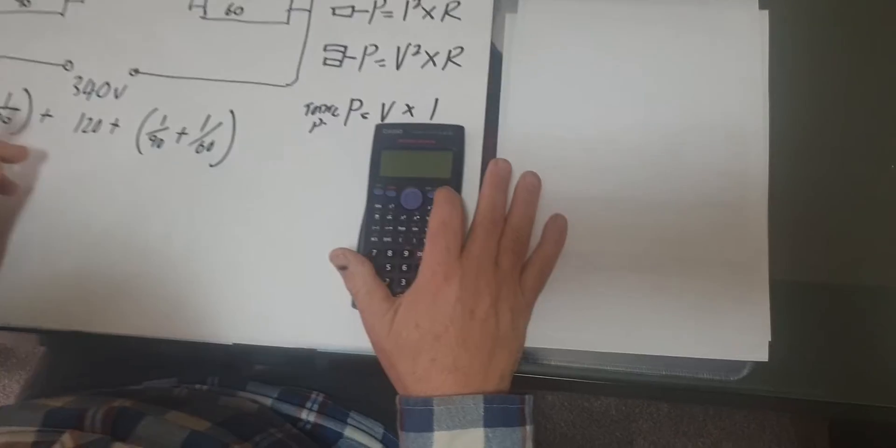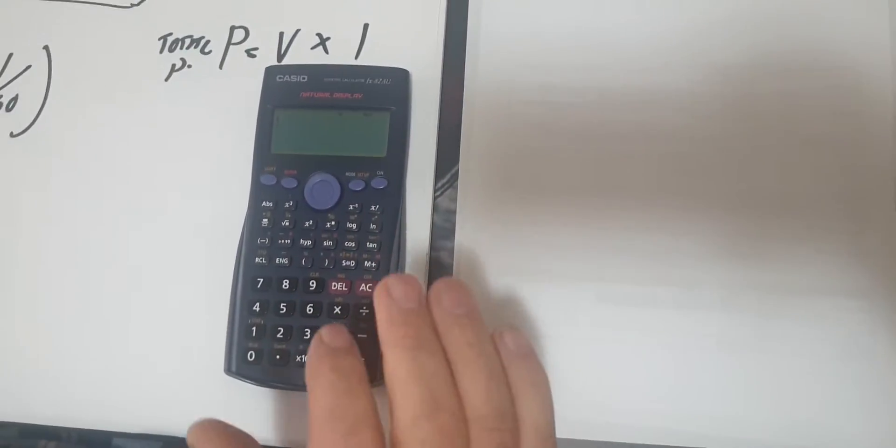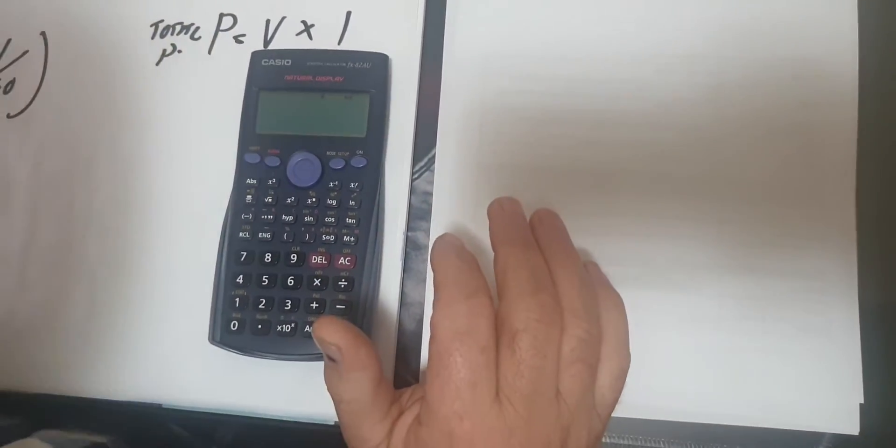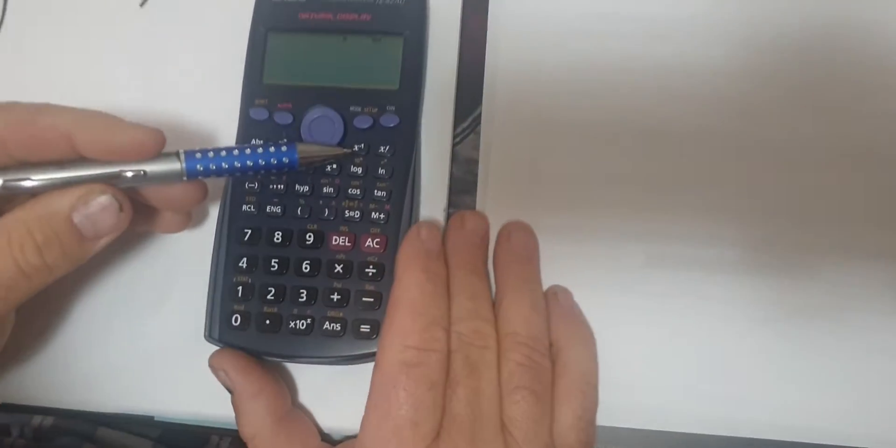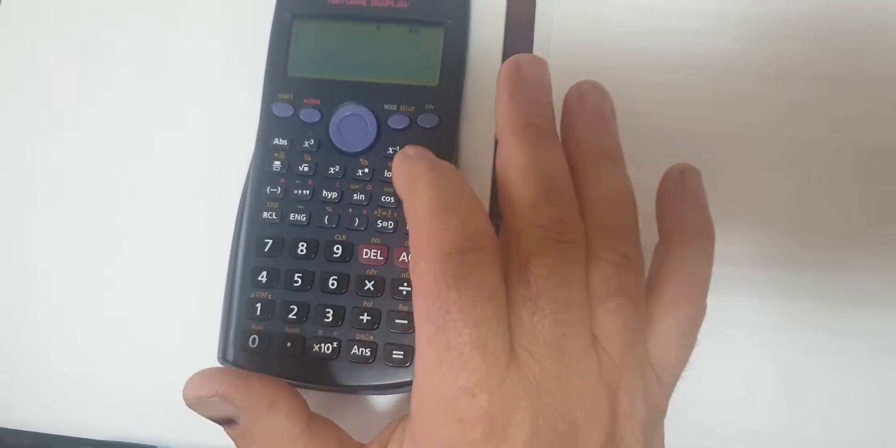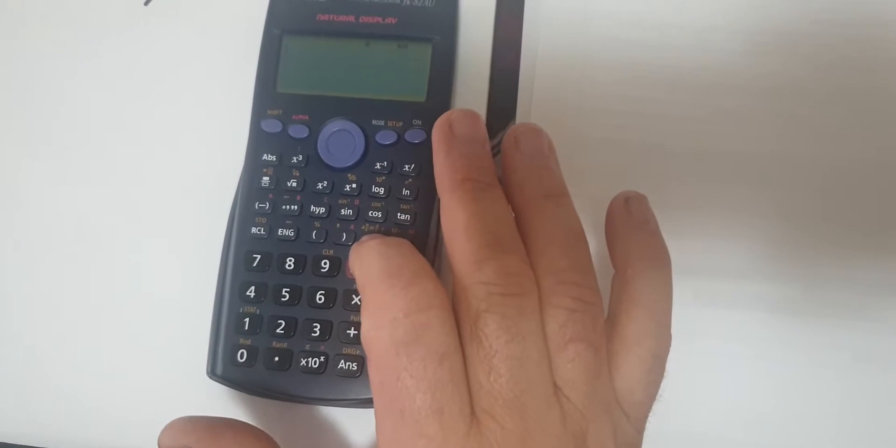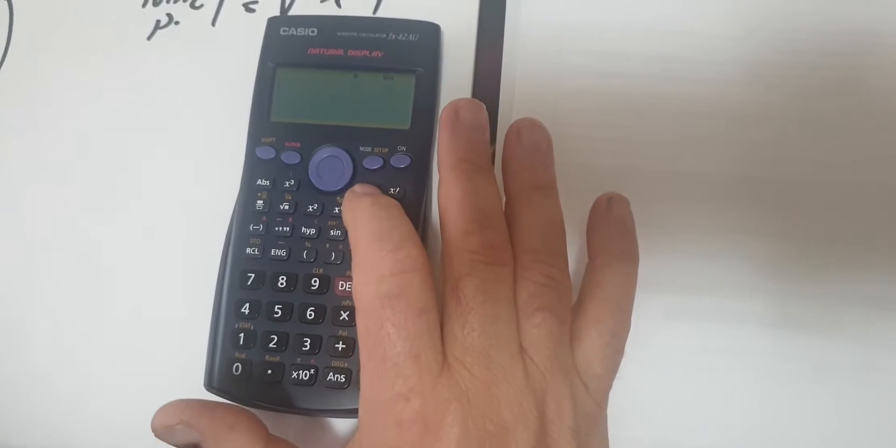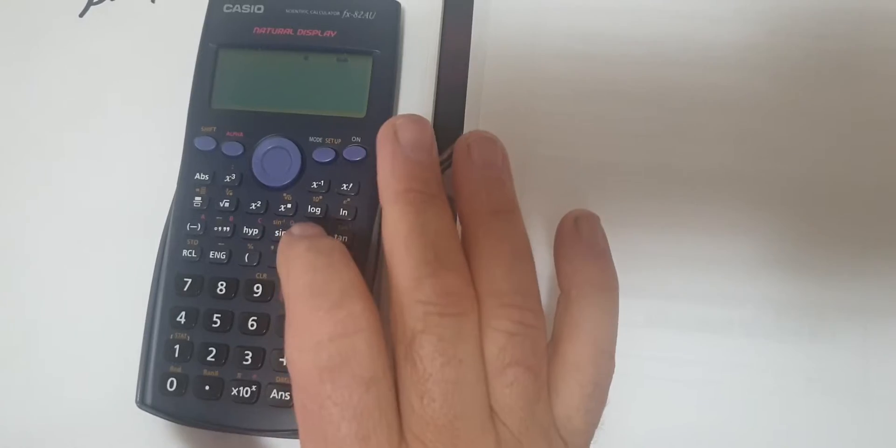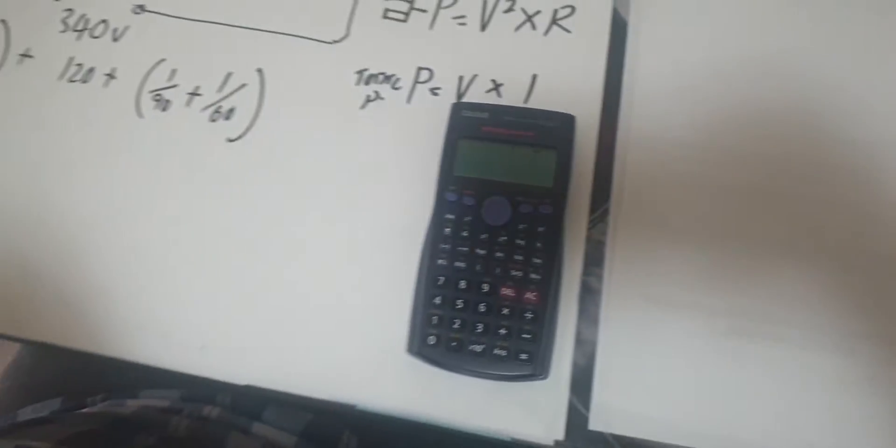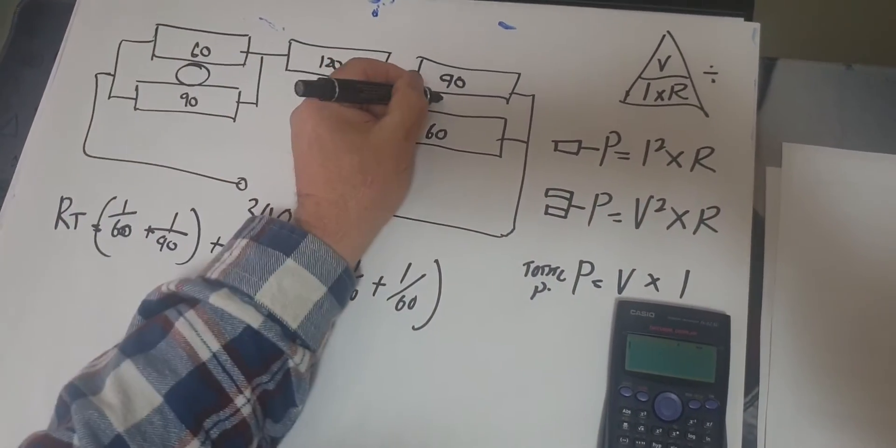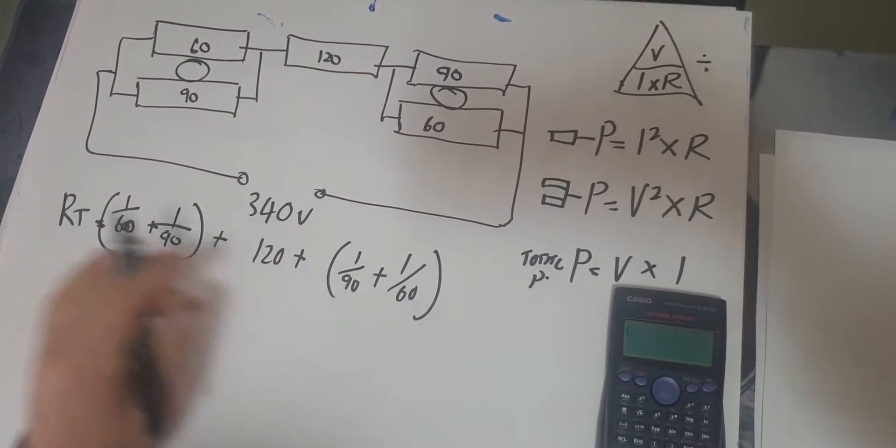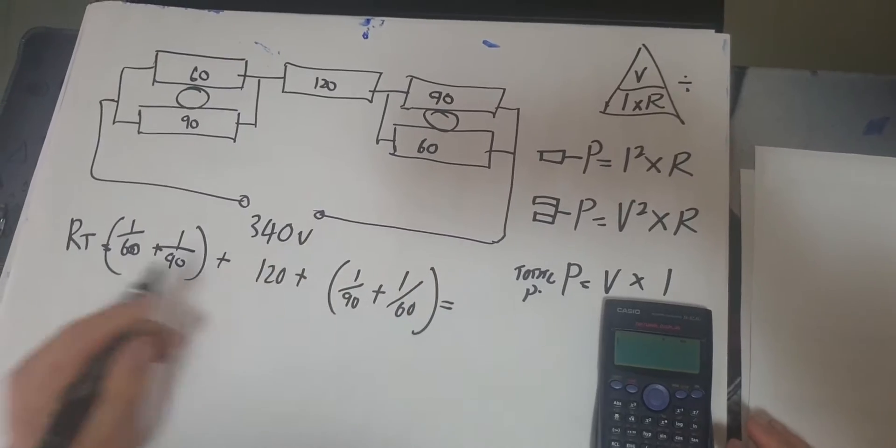Now remember on our calculator, we have a little icon here that we talked about last time called X to the minus 1. This shows us to put it over the value to give us a common denominator. So by using this we can work out the common denominator between these two resistors. So we've got 60 and 90 - we need to find the common denominator between that one and this one first, work them out, and then add everything up to get our resistance total.